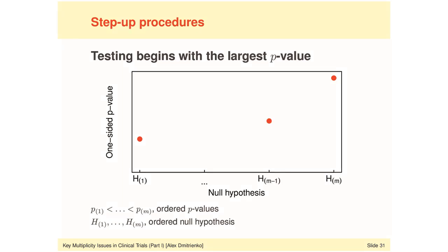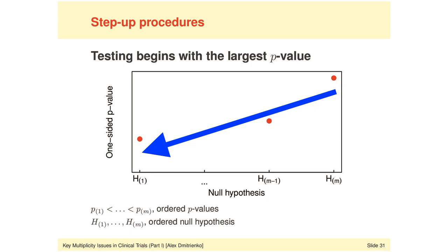Step-up procedures are the exact mirror image of step-down procedures. Testing begins with the largest p-value and works down to the smallest. If the largest p-value is less than the pre-specified threshold, all null hypotheses are rejected. Otherwise, that largest hypothesis is accepted and testing proceeds to the next hypothesis, continuing until the procedure reaches the hypothesis corresponding to the smallest p-value.